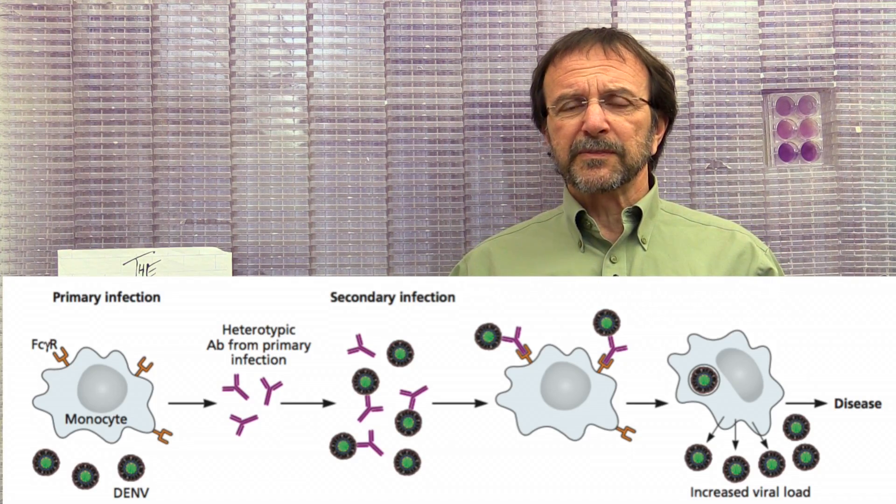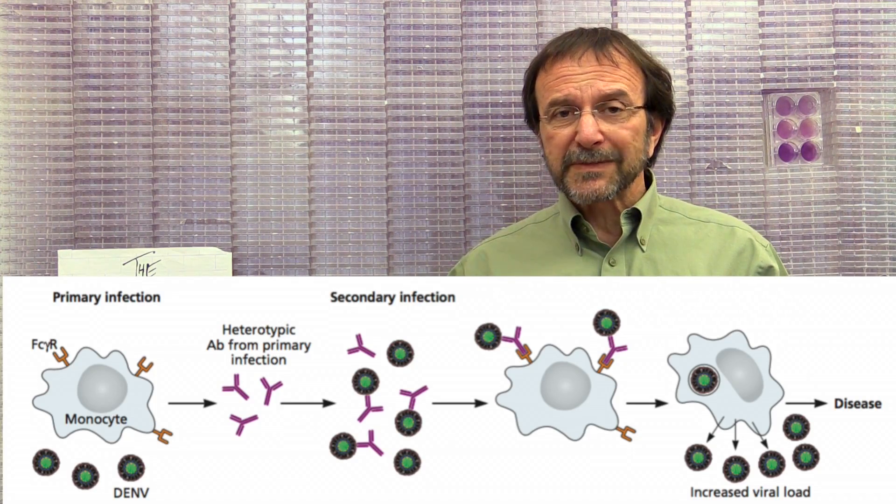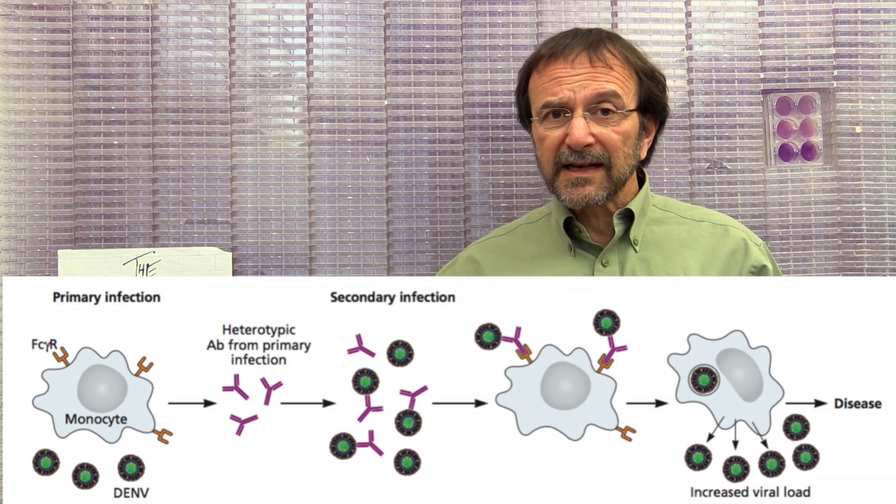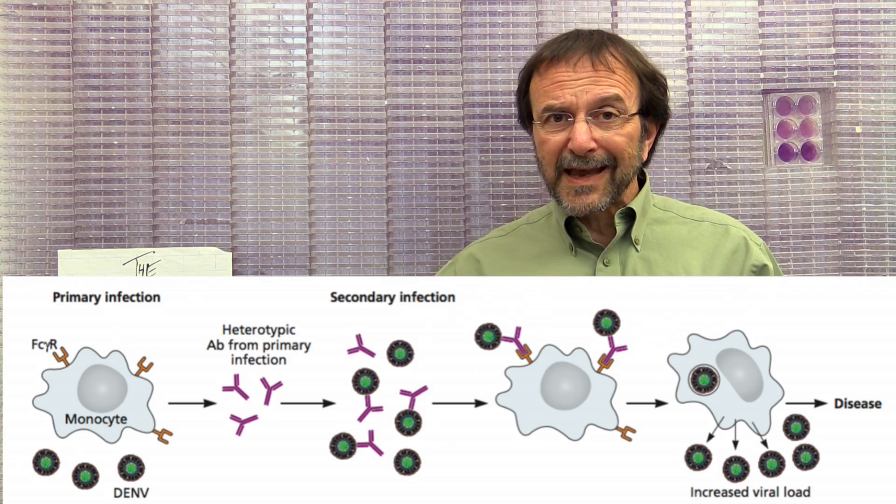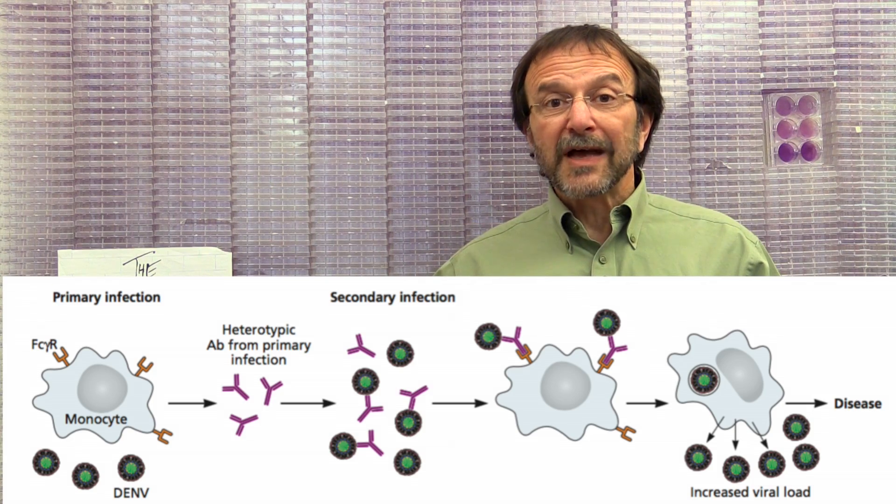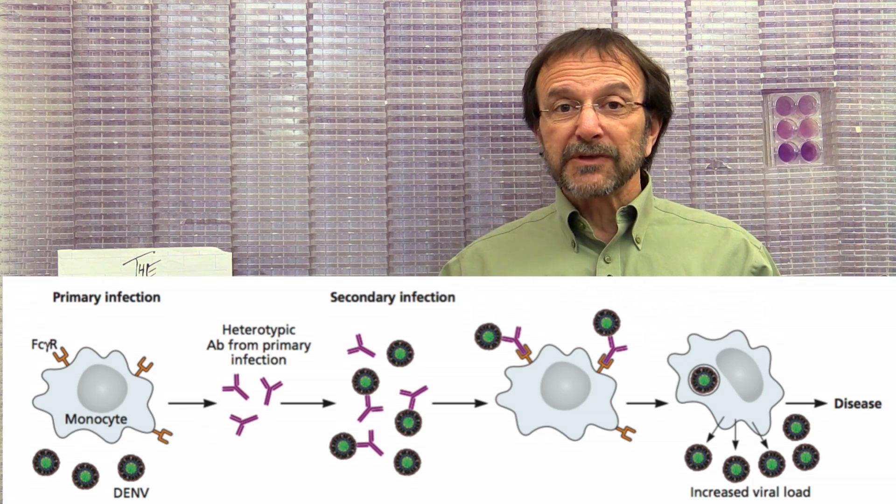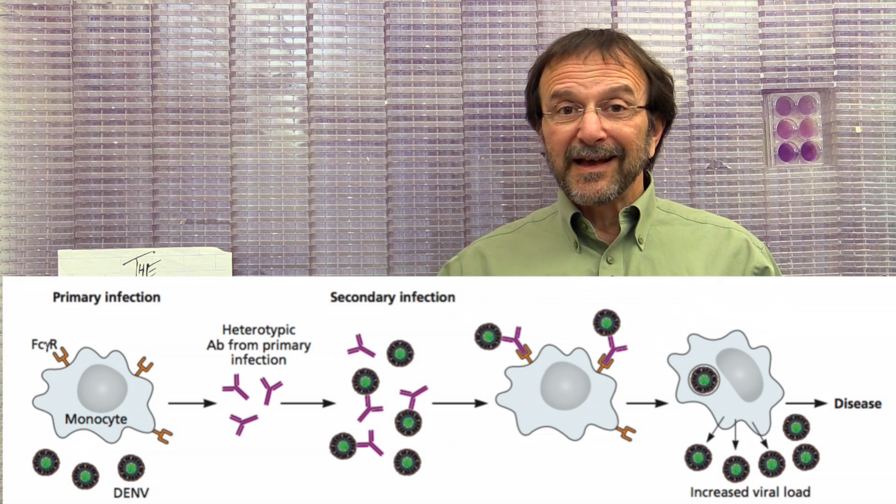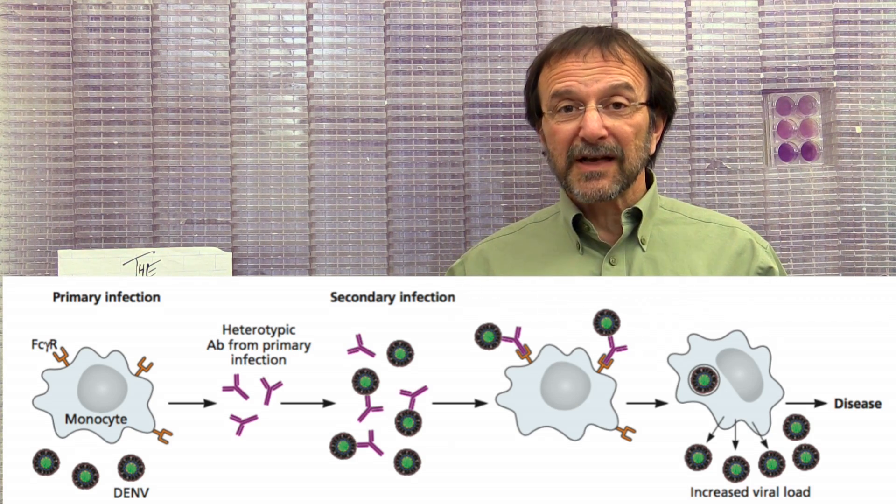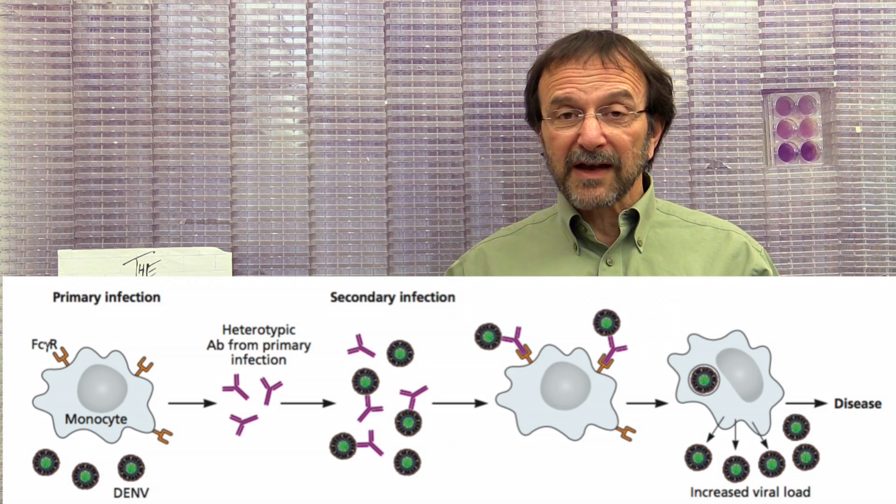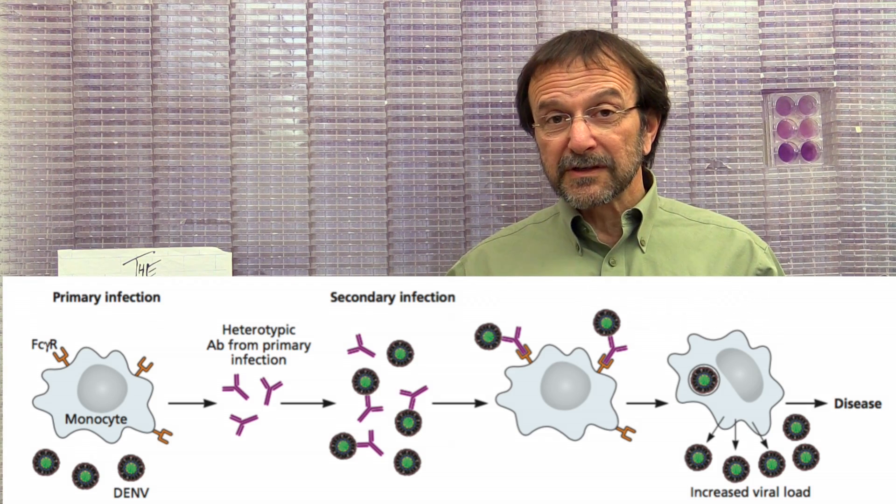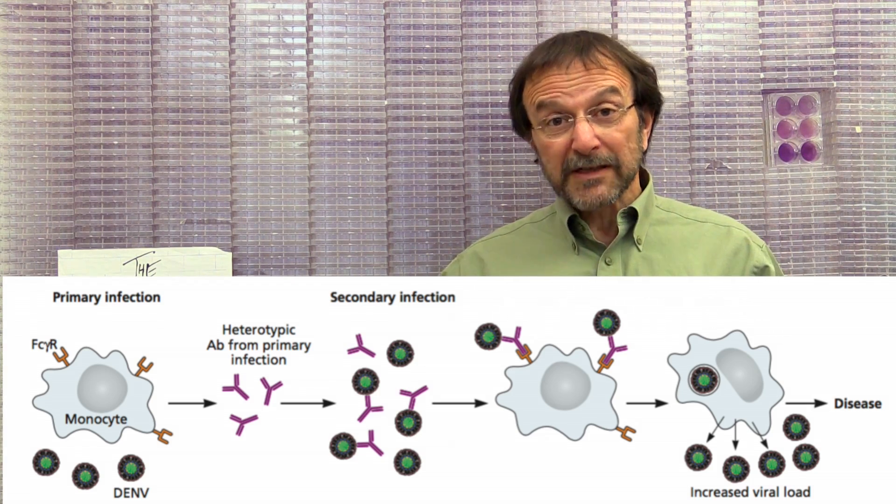When you get infected with one of the serotypes of dengue virus, you typically recover after a period. You have immunity to the virus, but then when you get infected with a second serotype, the antibodies that are produced against the first serotype will bind the new dengue virus, but they will not block its infection. Rather, they help the virus to get into cells that they normally would not infect. The result is more virus production and more serious disease upon second infections.